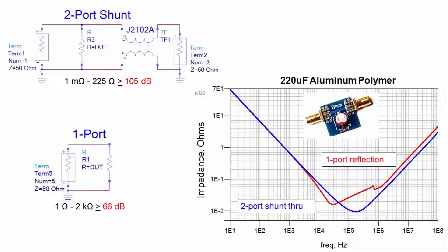In contrast, the dynamic range of the one-port reflection measurement is only 66 dB and can't measure impedance below a few hundred milliohms at best.